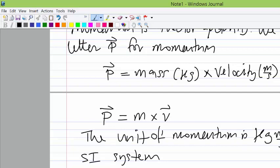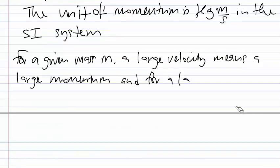Since momentum depends upon mass and velocity, for a given mass a large velocity would mean a large momentum, and for a given velocity a large mass will also mean a large momentum.